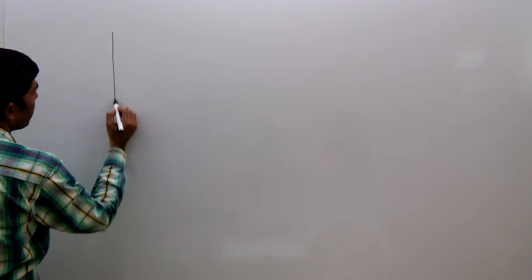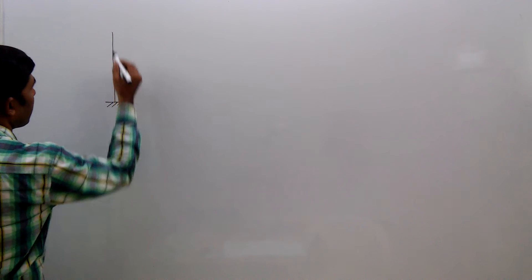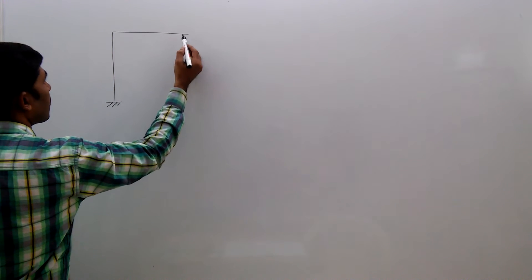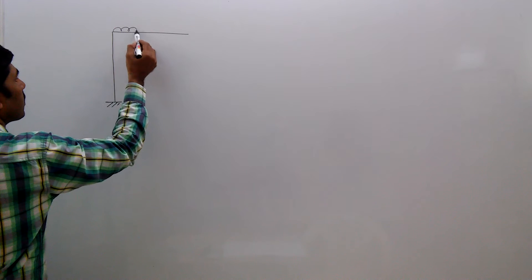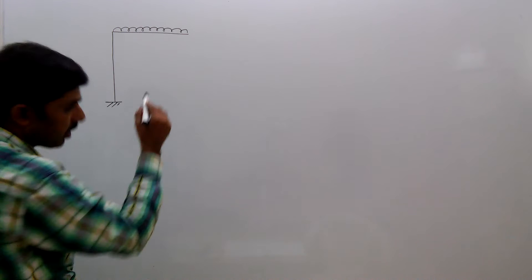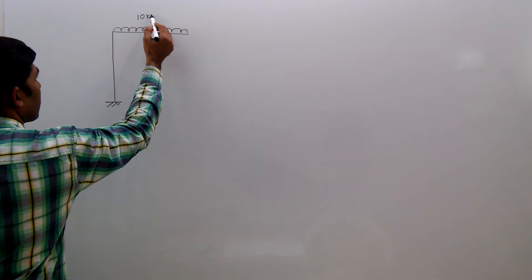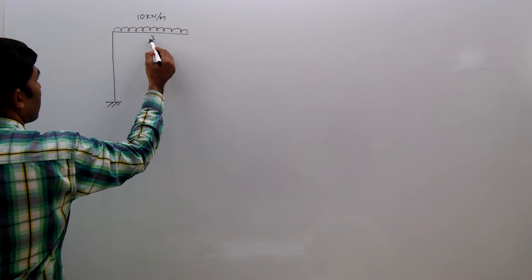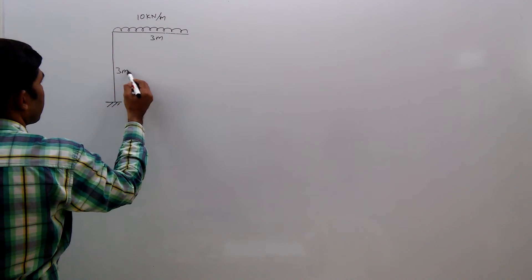A rigid frame is like this, carrying a UDL of 10 kN per meter. This span is 3 meters and this is 3 meters.